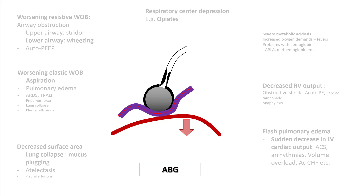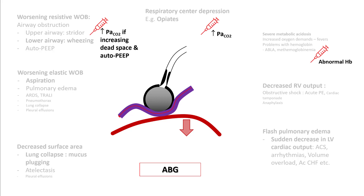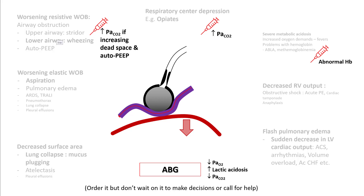Most people will order an ABG. However, understand that ABG gives you very limited information. You would be able to notice increased PaCO2 in patients with respiratory center depression, and you may find some abnormal hemoglobin levels such as methemoglobinemia. ABG can help confirm the findings of hypoxemia on the pulse ox — it will show low PaO2, which you already know. Lactic acidosis will be increased because of work of breathing or hypoxemia. Make sure you order an ABG but don't wait on it to make decisions or call for help.